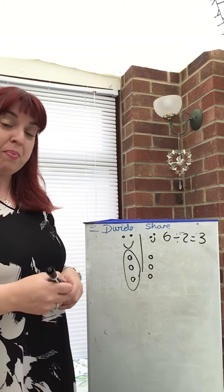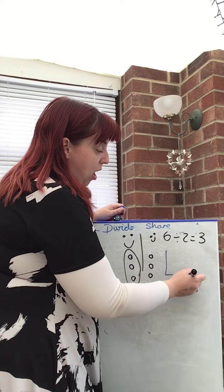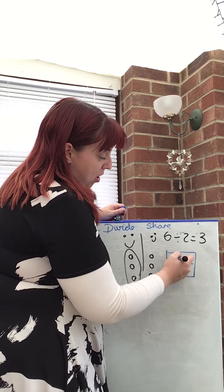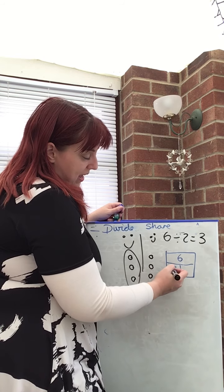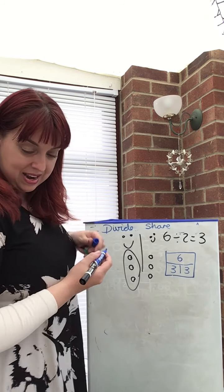I could also show that as a bar model. So for example, my part, part, whole, here is my whole number six. I've shared it into two equal groups, each with three in it.